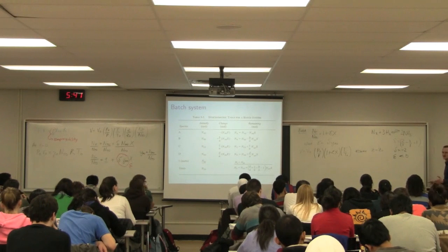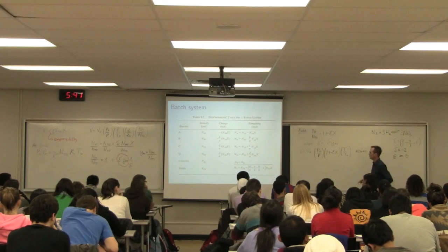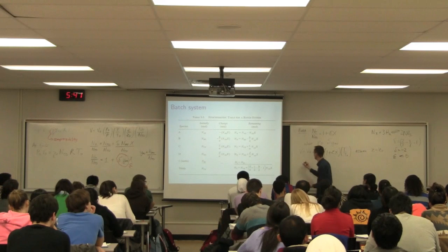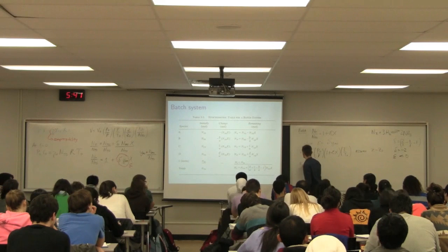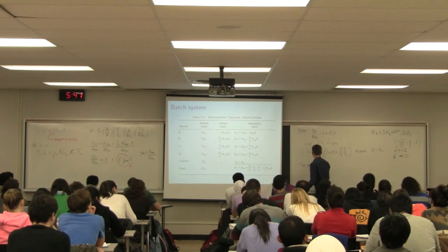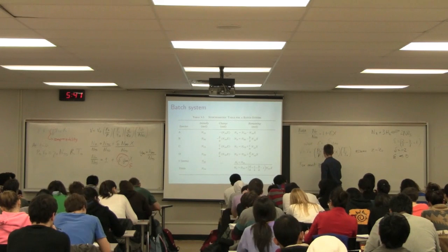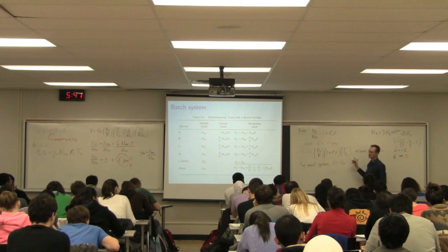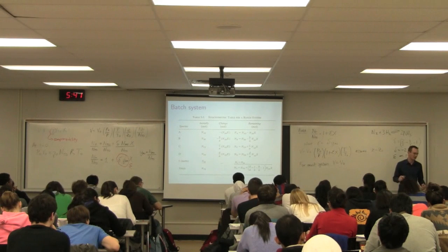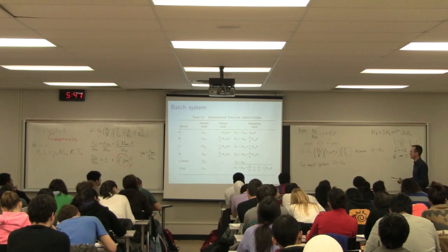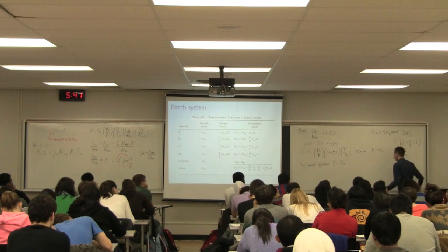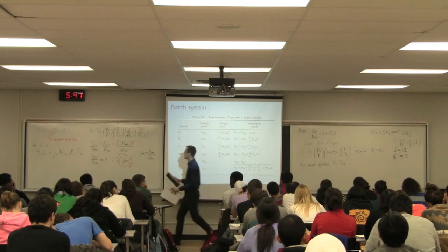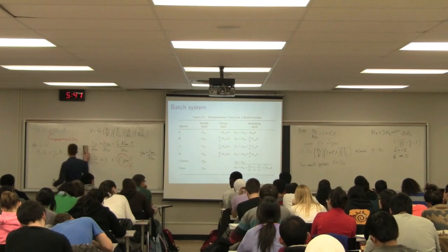Let's recognize that most of our batch reactors do not have a change in volume. For most systems, V equals V₀. But this equation is still powerful — it's telling me I can rearrange for pressure. So if my volume is constant, it's my pressure that's going to be changing. In a closed system, pressure will be varying.